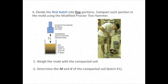We then divide batch number 1 into 5 portions. We take the first portion and place it in the mold, tamping the soil 25 times with the modified Proctor hammer, which weighs 10 pounds and drops 18 inches. We then take the second portion of batch number 1, place it in the mold, and compact it as we did the first portion. Then we compact the third, fourth, and finally the fifth portion, all in the same mold.